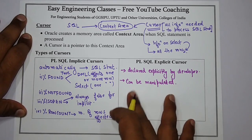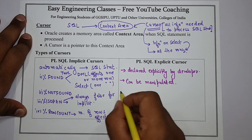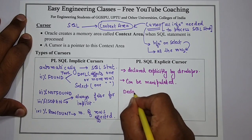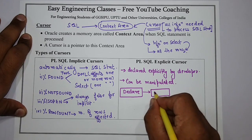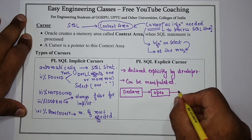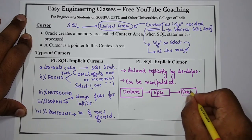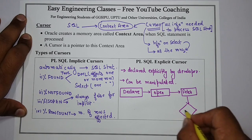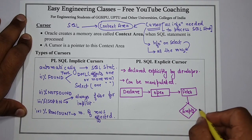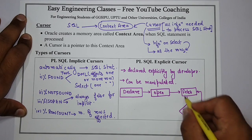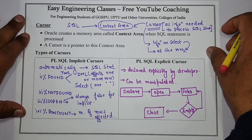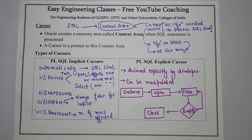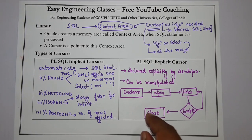There is a processing flow for explicit cursors. First, we declare a cursor. Then we need to open that cursor. Then rows are fetched using FETCH. We check whether the cursor is empty — if not, we continue fetching. Finally, we close the cursor. The four steps are: declaration, open, fetch, and closing.